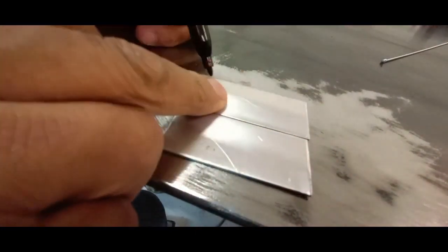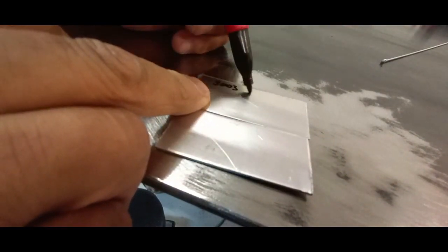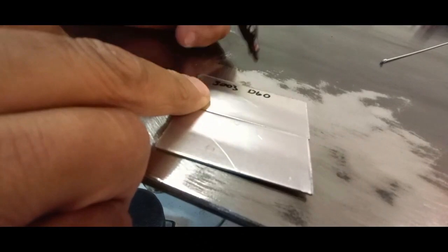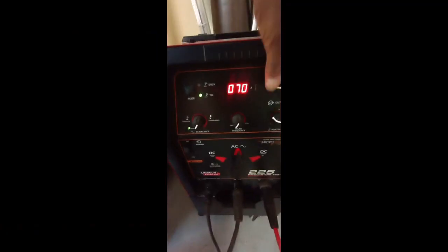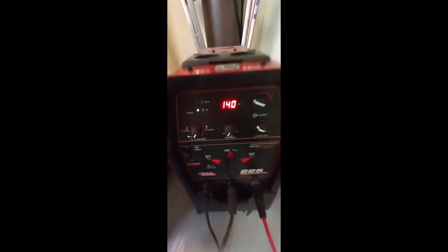So we've got a couple of coupons of 3003/6061 aluminum. Like I mentioned, usually I run about 70 amps on this, but we're bumping up to 140. Keeping a really tight gap, that's really critical on the aluminum. Does not work well with a gap on aluminum.